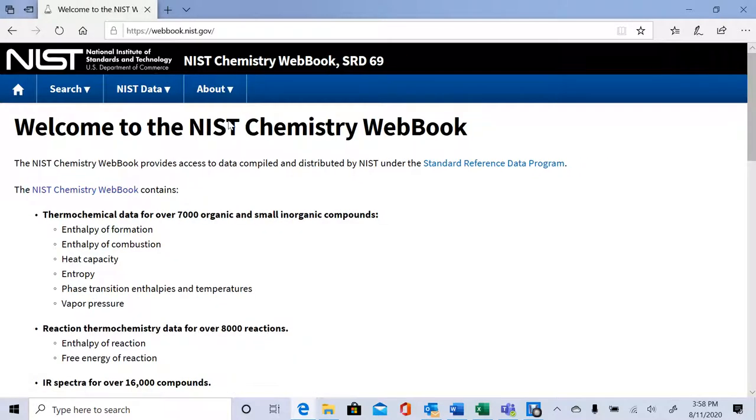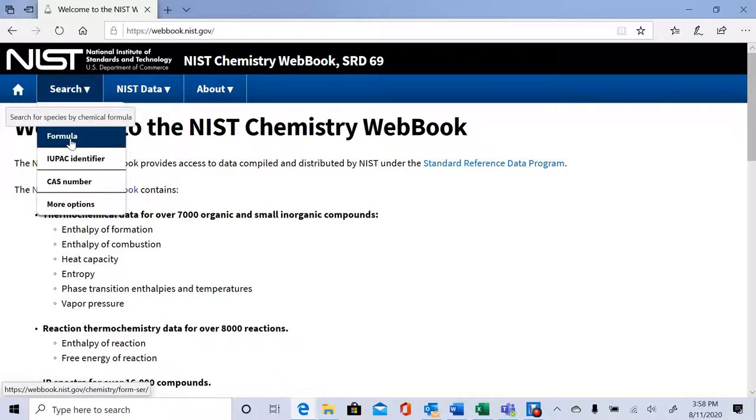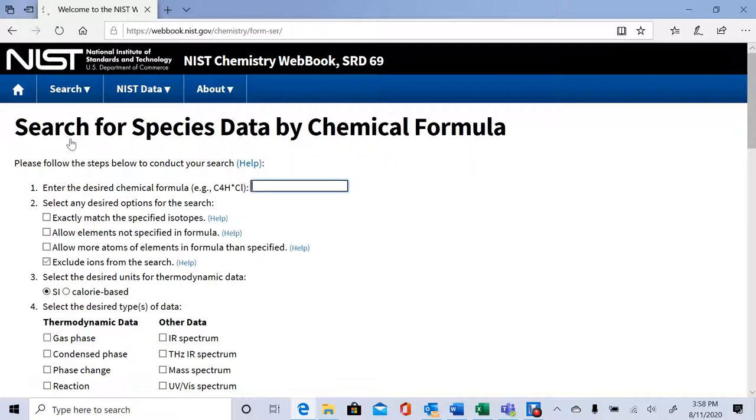If we open up the web page, the first thing we see on the left side is a search bar. Usually it's easy, it's just a search by formula. Then we can enter whatever chemical species we're interested in. I'm going to use chlorine gas for this example.